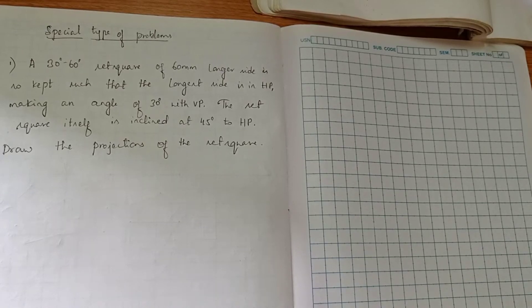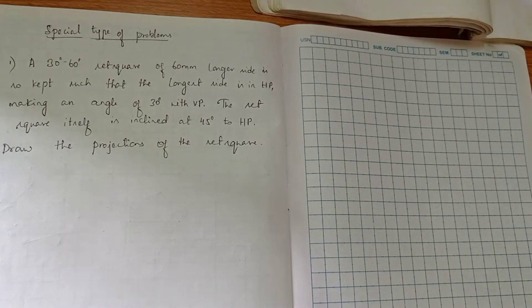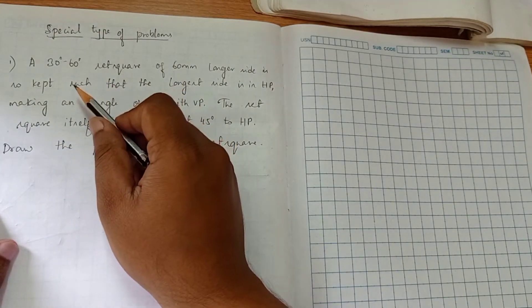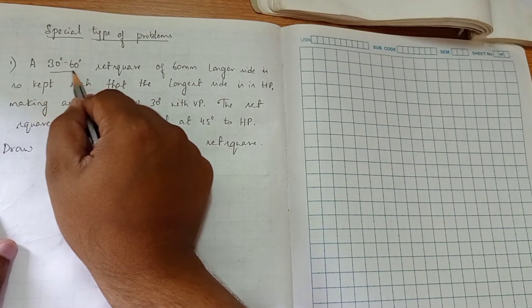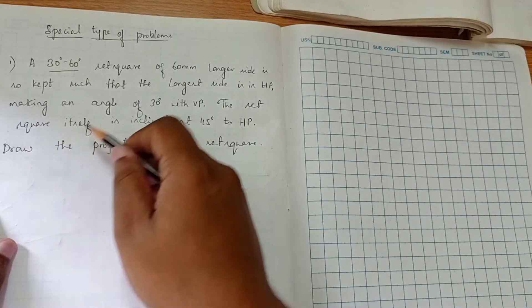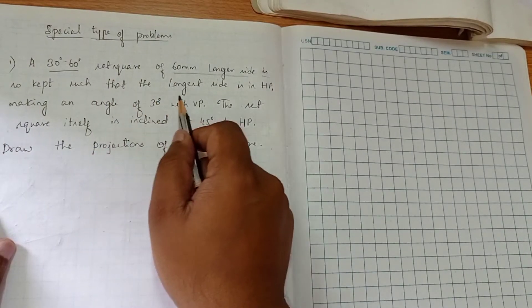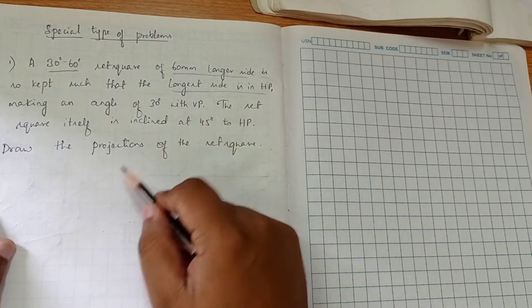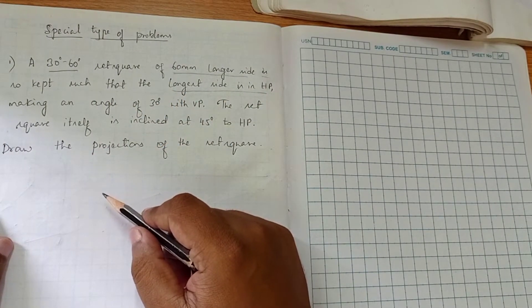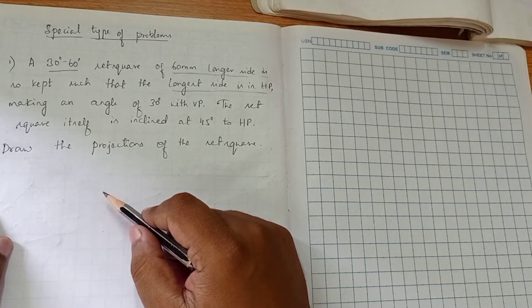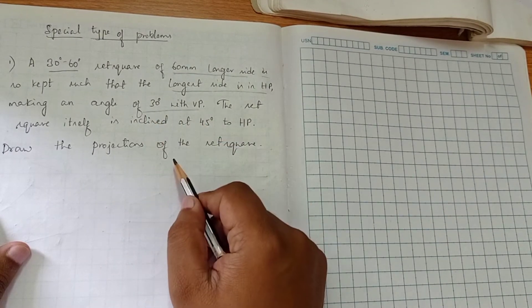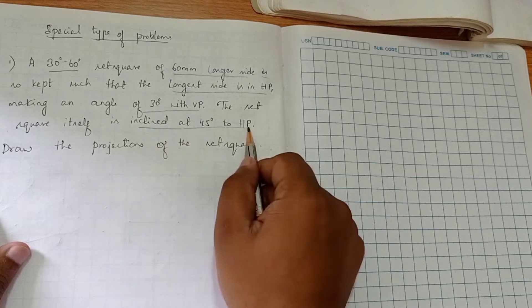Now we will proceed to the special type of problems. In this special type problem, the first problem we are choosing is a set square. For the construction of a set square, they have given two angles here: 30 degrees and 60 degrees. A set square of 60mm longer side is kept such that the longer side is in the HP plane, making an angle of 30 degrees with VP. The set square itself is inclined at 45 degrees to HP.